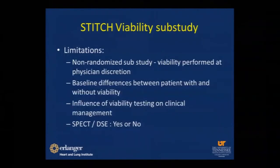Key STITCH limitations: it's not a randomized trial for the viability sub-study — the viability was performed at the patient's discretion. There were very clear differences in baseline patient characteristics between viable and non-viable groups. The study had influence on both viability testing and management based on results — there was no uniform standardized guideline. They used SPECT and dobutamine stress echo with dichotomous interpretation of viability — present or not — rather than dealing with the extent of myocardial viability.